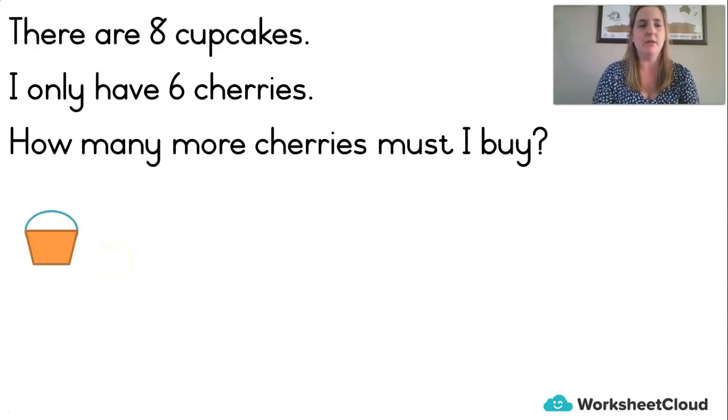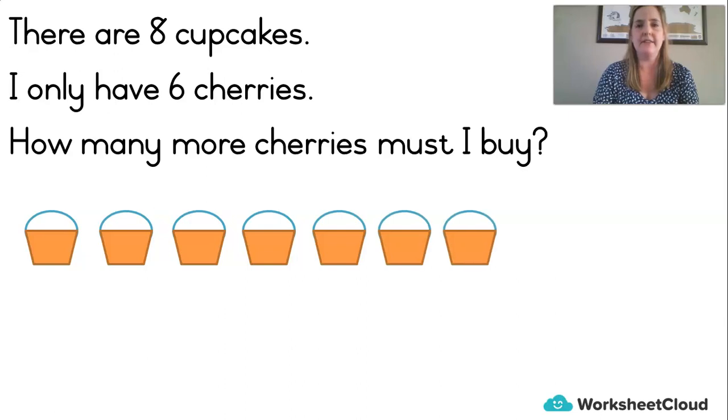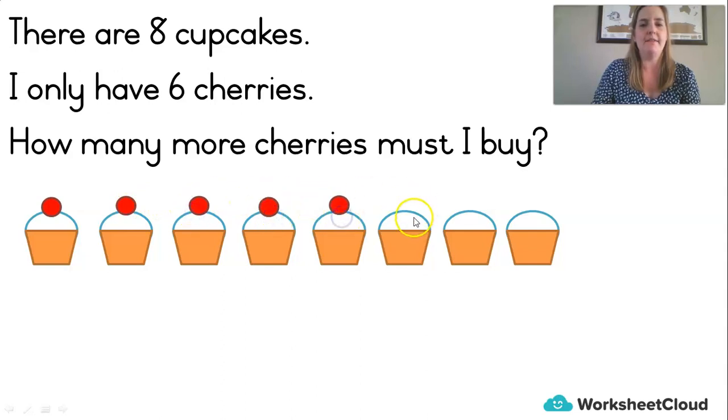One, two, three, four, five, six, seven, eight. Okay, let's check that. One, two, three, four, five, six, seven, eight. Now I've got six cherries. That's nice. One, two. Don't they look nice? Three, four, five, six cherries. That's all. How many more cherries must I buy from the shops?